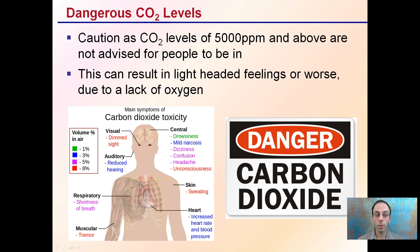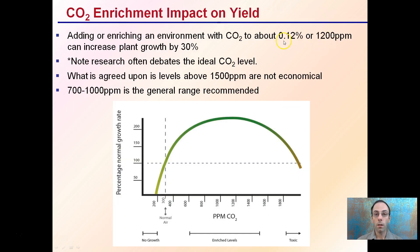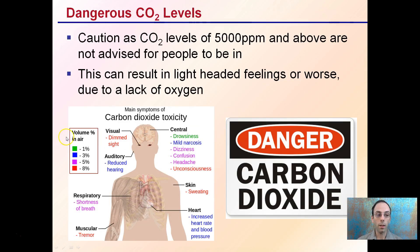Now, dangerous levels of CO2 — this applies particularly to humans. There is carbon dioxide toxicity, but those levels have to approach 5000 parts per million and above; those are not advised for people to be in, as it can result in lightheadedness or worse due to lack of oxygen. You can see some of the symptoms as CO2 level increases. As far as what we're trying to keep our plants at, 0.12% would be ideal, and it takes even 1% to start having any carbon dioxide toxicity for humans — so it's well below anything that would be of concern. But when you start getting to higher levels, that's where we start getting those cautions.